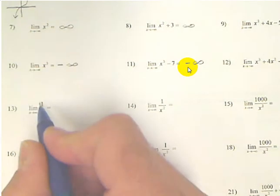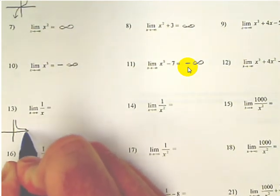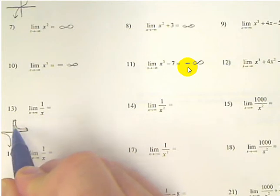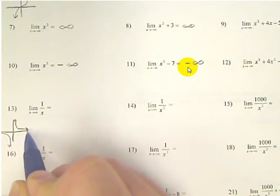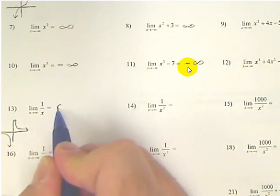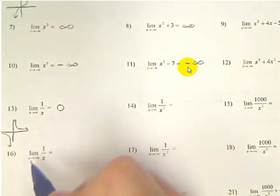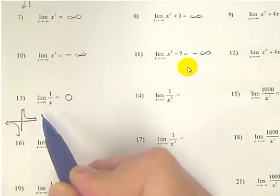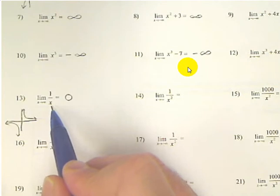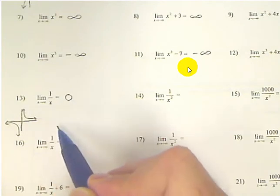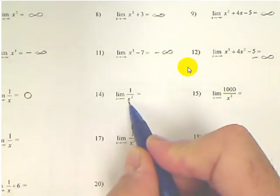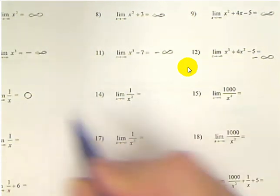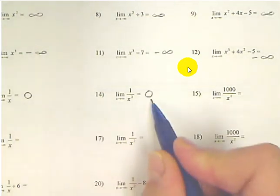Number 13 is the equation 1 over x, a hyperbola graph from Algebra 2. As x approaches infinity, as you go to the right forever, you can see this thing leveling off right on top of the x-axis, and because it's leveling off there, the y values are approaching 0. It's getting really close to the x-axis; it doesn't ever get there, but that doesn't matter. If you plug in a million, 1 divided by a million is 0.00001 — very close to 0. On number 14, 1 divided by a million squared is even smaller, so it's getting really close to 0 faster, but still approaching 0. On number 15, 1,000 divided by a million squared is also really close to 0. Picture putting in a billion, a trillion, a quadrillion — the denominator gets enormous while the numerator stays at 1,000, so this fraction gets closer to 0.